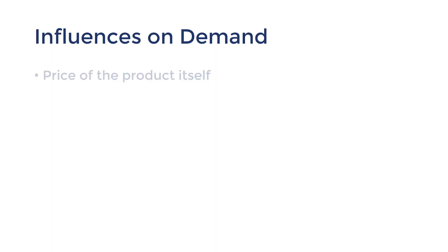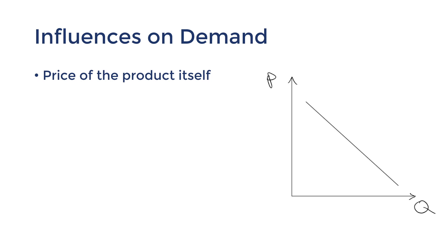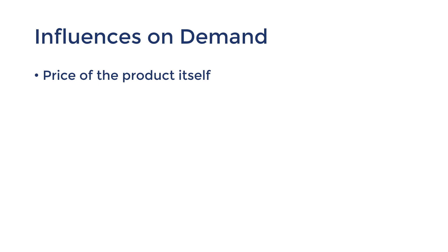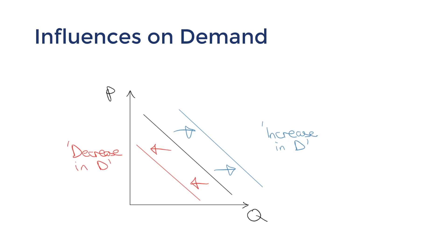Now let's talk about the influences on demand. The first influence is the price of the good itself. As we've established with the law of demand, increasing the price will cause quantity demanded to fall — we call this a contraction in demand, illustrated as a movement along the curve to the left. Lowering the price causes an expansion in demand and a movement to the right. Price of the product itself is the only influence that causes expansions, contractions, or movements along the curve. All other influences cause shifts in the whole curve, which we call increases or decreases in demand. It's very important to use the right terminology to maximize your marks in exams.